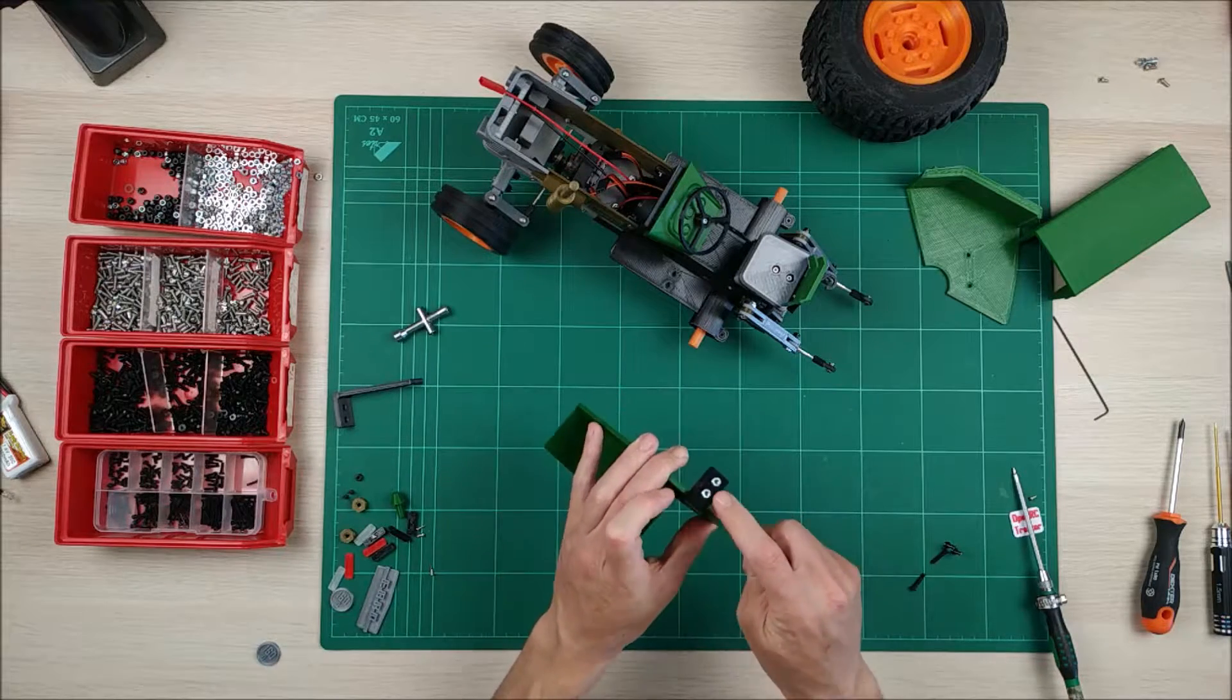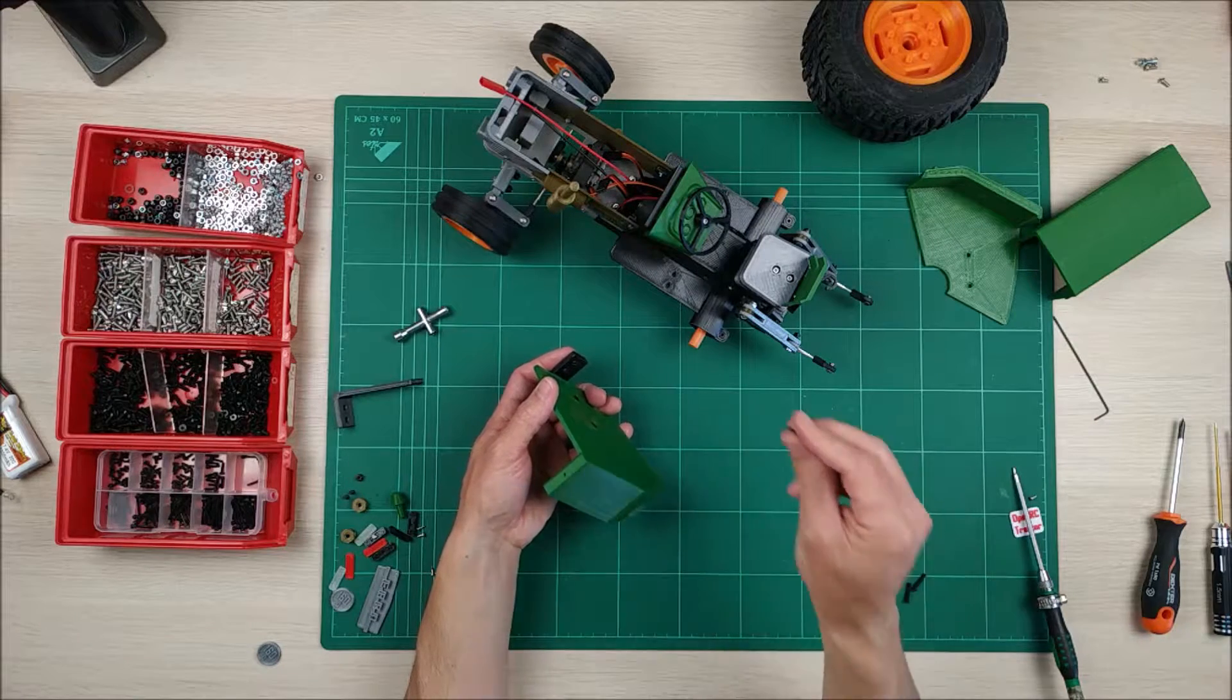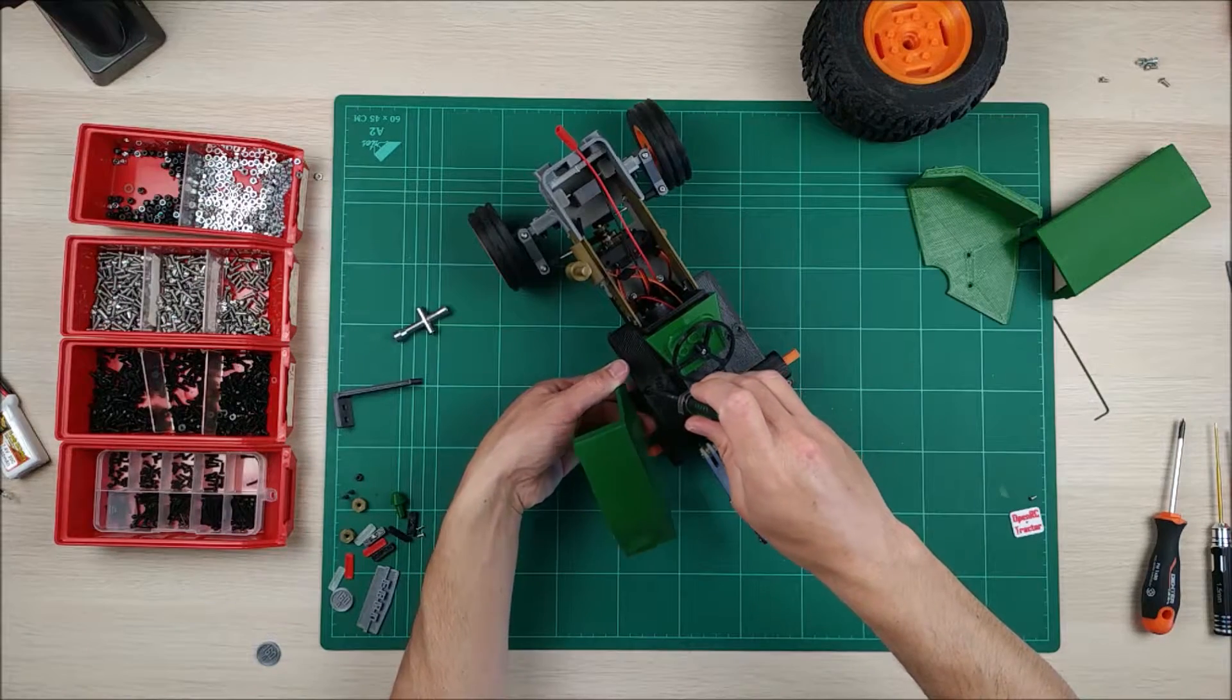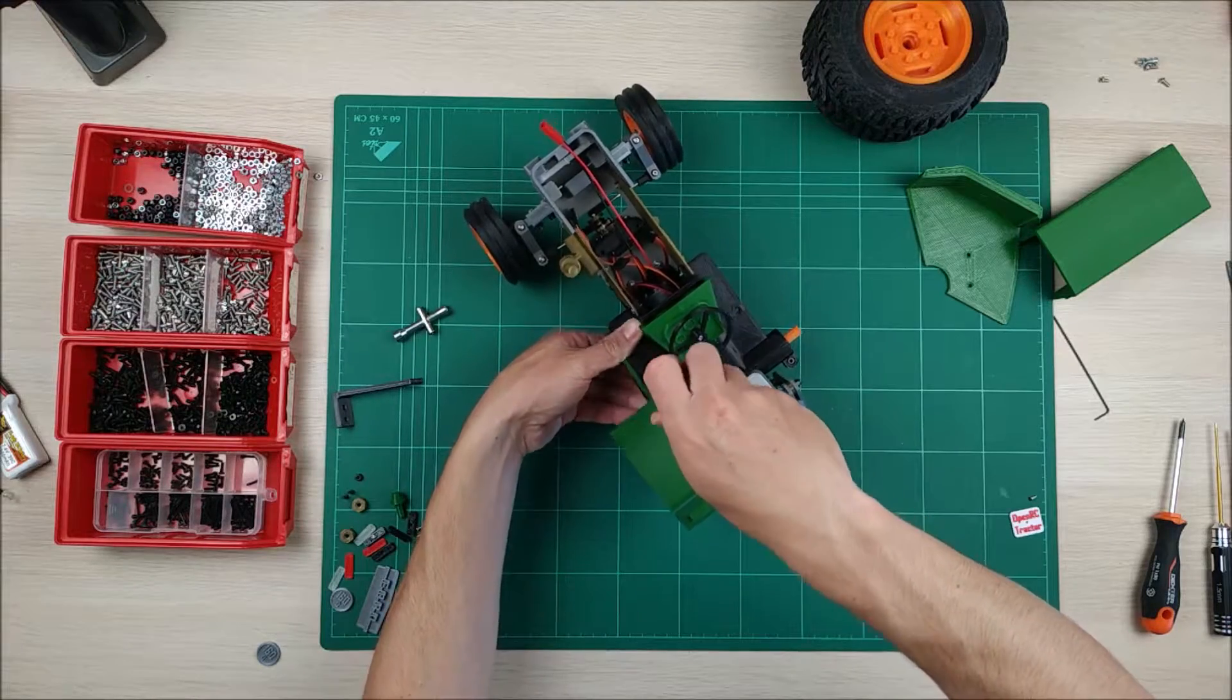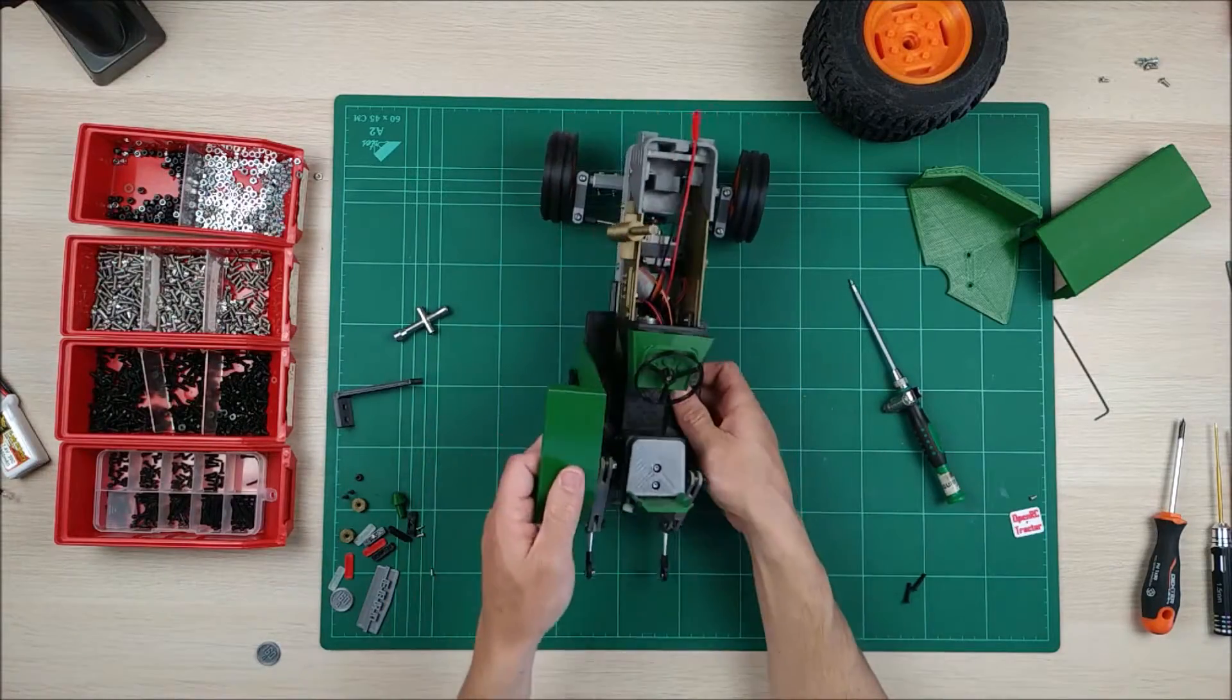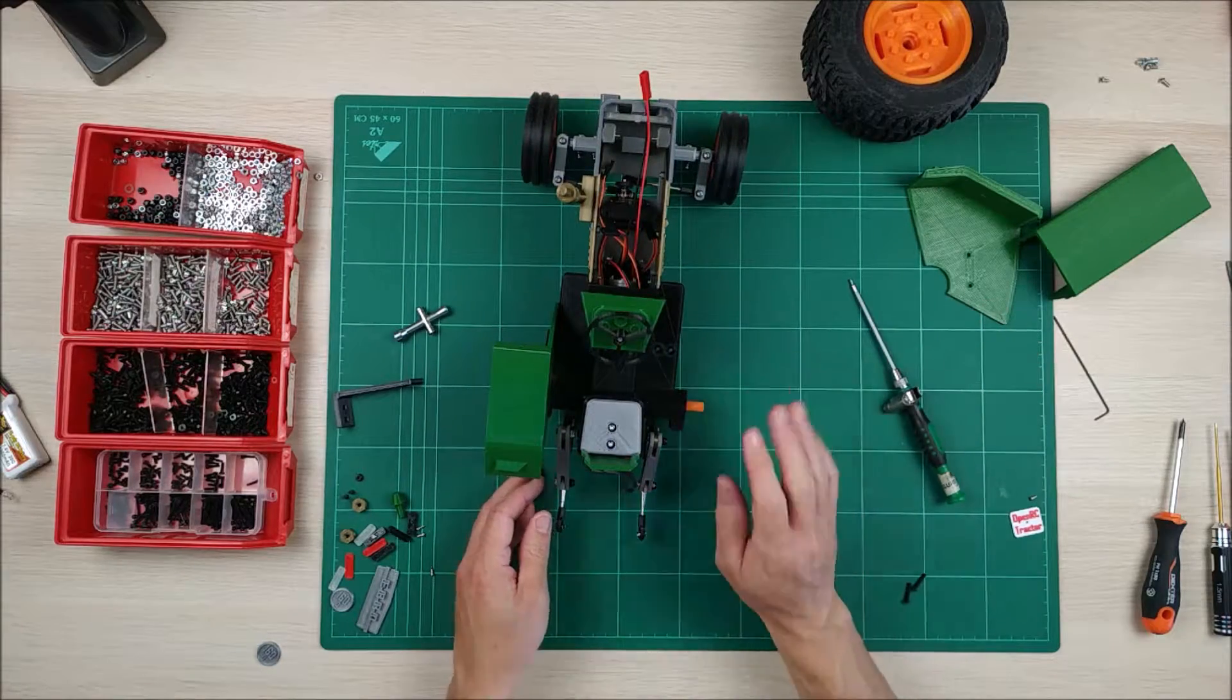We have already inserted these M3 nuts. And then we are going to use this countersunk M3, that's 16mm long. You can do it with 12mm long, but it's a bit too tight, so I normally use these 16mm if I have them lying around here. And as you can see here, we are going to do this for the other right part. So let's do it.